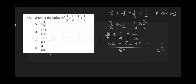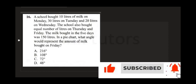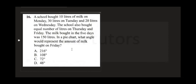The next question says: a school bought 10 liters of milk on Monday, 30 liters on Tuesday, and 20 liters on Wednesday. The school also bought equal numbers of liters on Thursday and Friday. The milk bought in the 5 days totaled 150 liters. In a pie chart, what angle would represent the amount of milk bought on Friday?